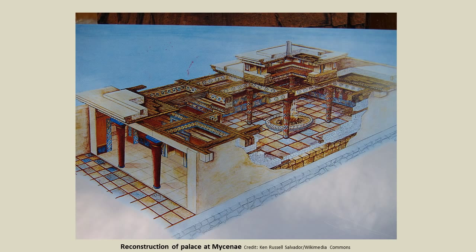The palace might have been used for all sorts of activities — religious festivals, and certainly the king would have received foreign dignitaries here. There would also have been storage areas below the palace with storerooms for goods such as wine, barley, and oil.